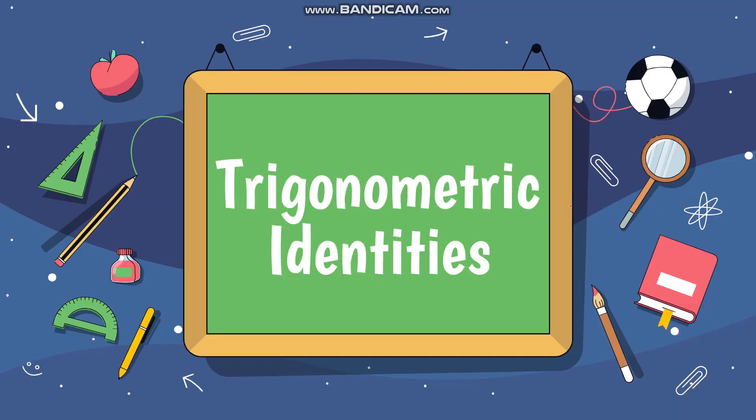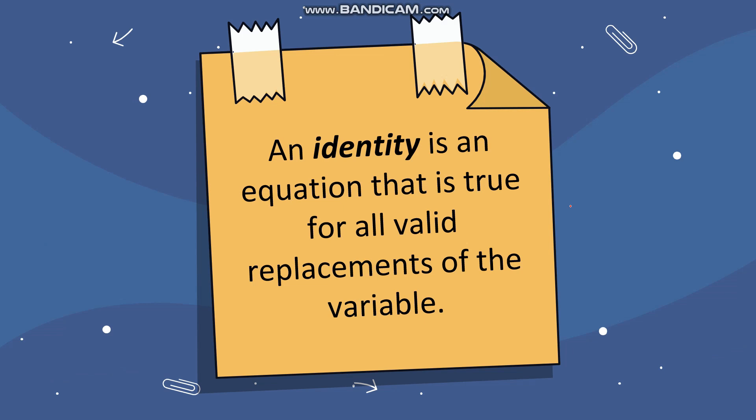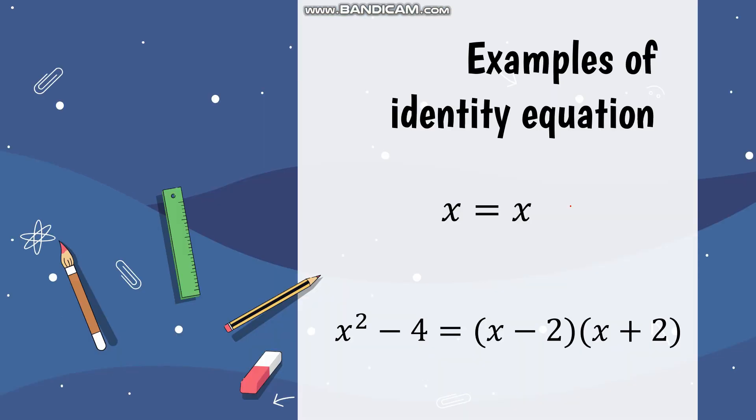For today's lesson we will be discussing trigonometric identities. Before we proceed, we will first discuss the two types of equations: the conditional and the identity equation. An identity is an equation that is true for all valid replacements of the variable, meaning whatever value we use for the given equation, it will always be true. That's why it's called an identity — the equations on both sides are already equal.